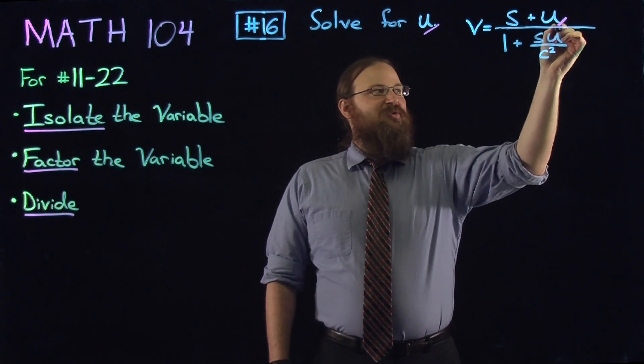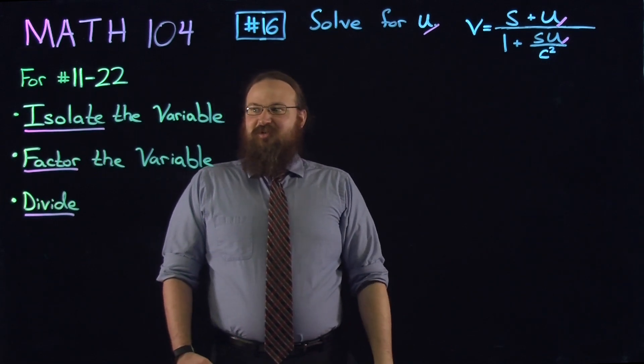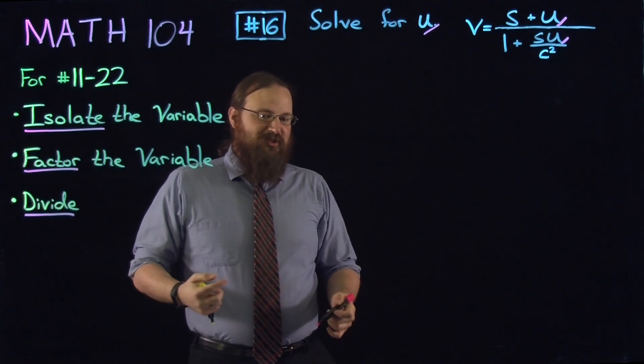So here, where do we have u? We see u and u. What we're going to do is follow the same steps that we did before. We're going to isolate the variable, and this is going to be a pretty involved process.